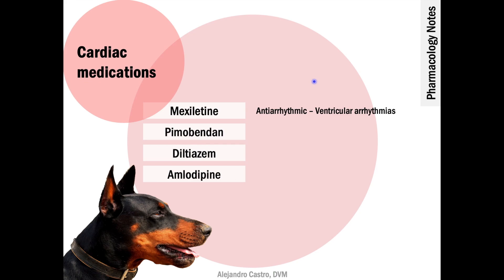Mexiletine is an antiarrhythmic agent with similar effects as lidocaine and is used to treat ventricular arrhythmias, including premature ventricular complexes and ventricular tachycardia.